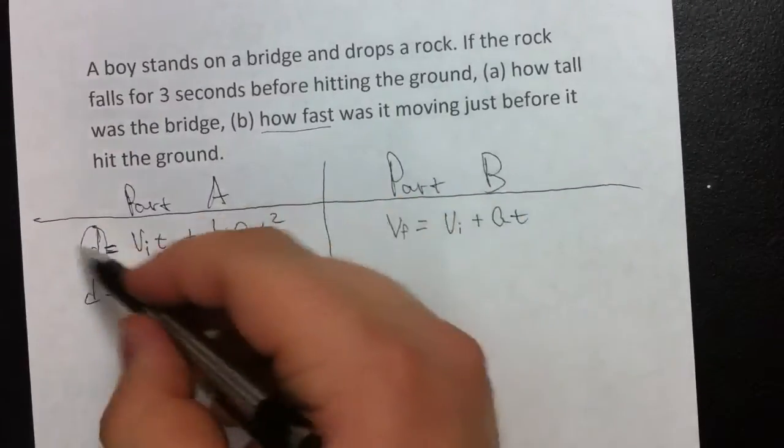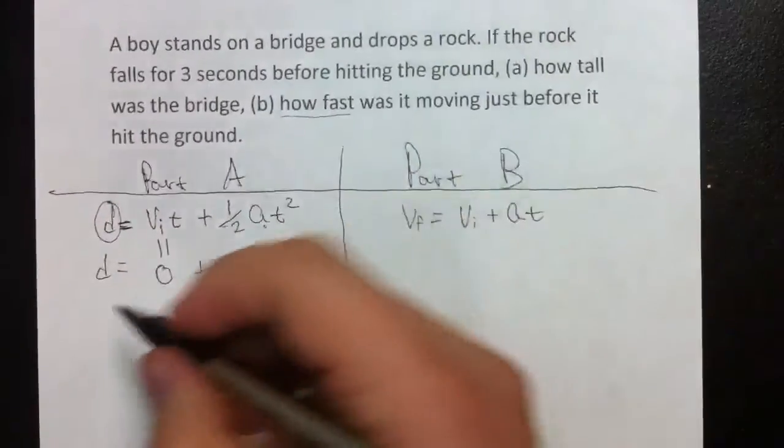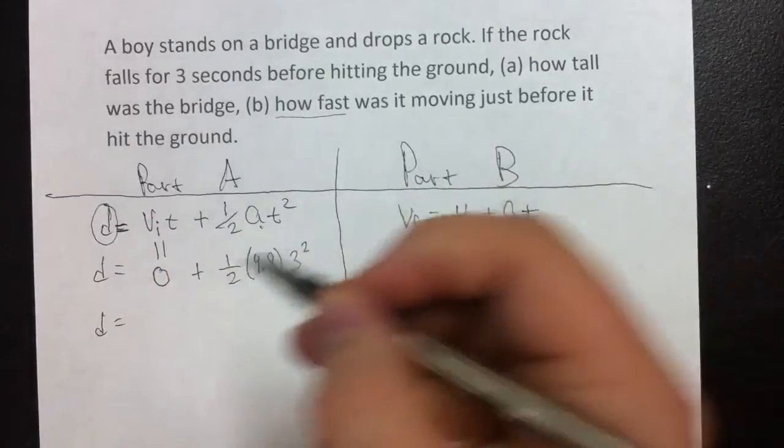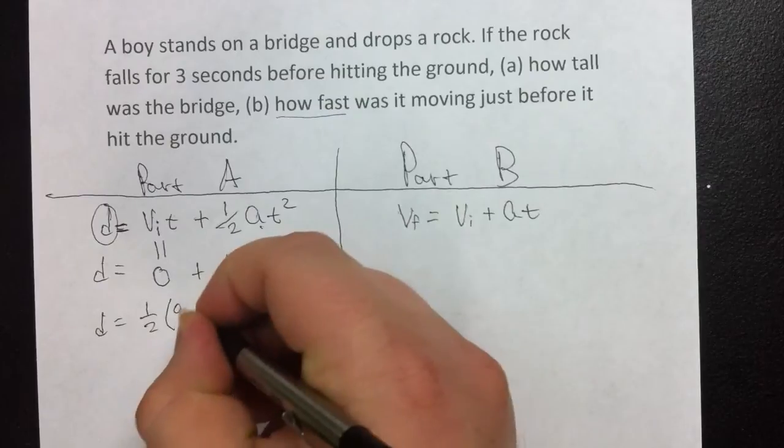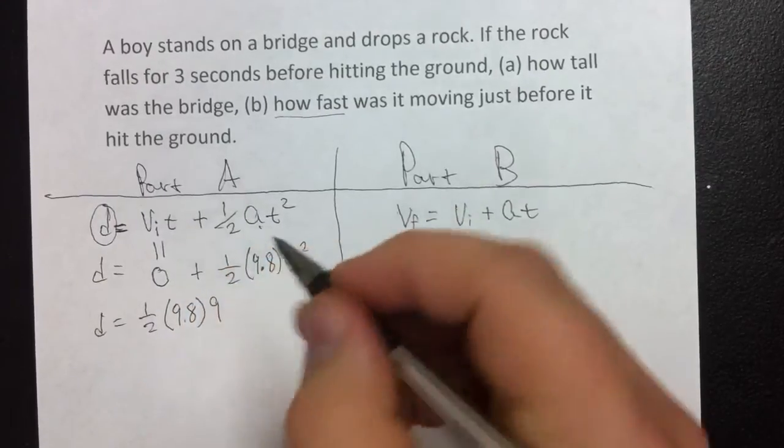If you know how to use this formula, this is actually a very simple problem. Distance is equal to one-half times 9.8 times three squared, which is nine.